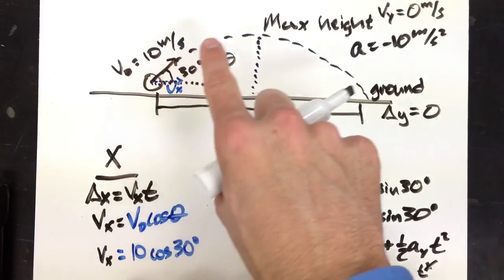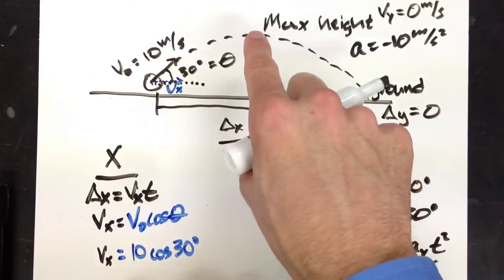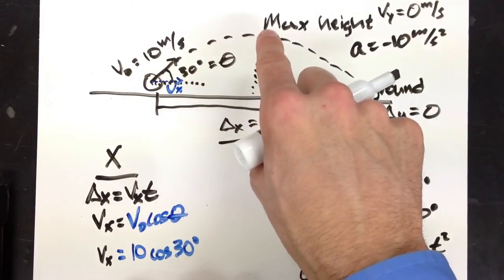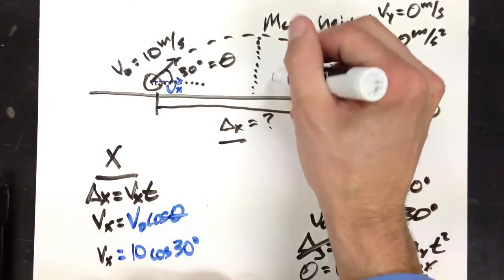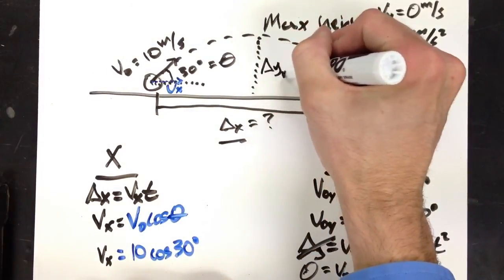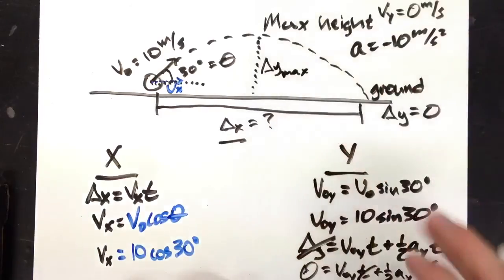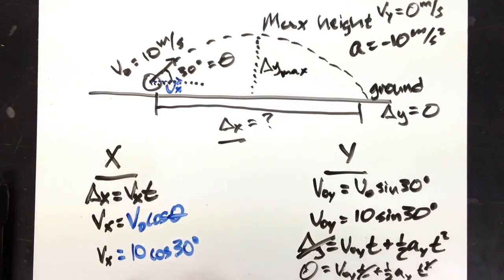And you know v final right to that point is 0. You could solve for this delta y max, that max height.